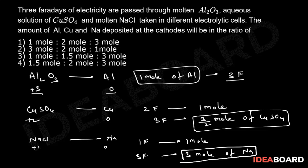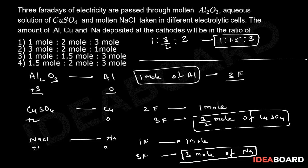So the ratio in three cases will be one is to three by two is to three. That's one is to 1.5 is to three, and this value is given in option three. So option three is the correct answer.